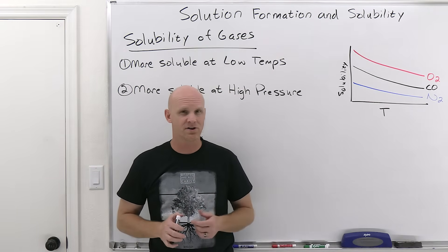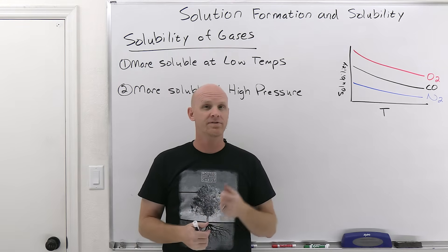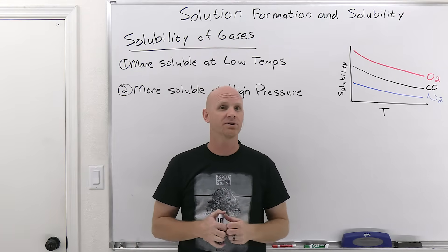Now we'll take a look at some factors affecting solubility, starting with the solubility of gases. There are two big things that affect the solubility of a gas: temperature and pressure. All gases are more soluble at lower temperatures but higher pressures. Here the solubility is plotted as a function of temperature for O2, CO2, and N2, and you can see that for each one, solubility decreases as temperature increases — this is true for all gases.